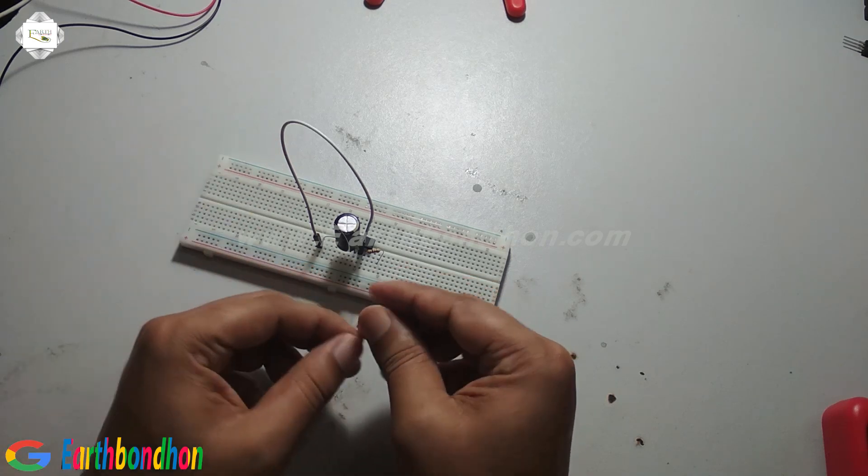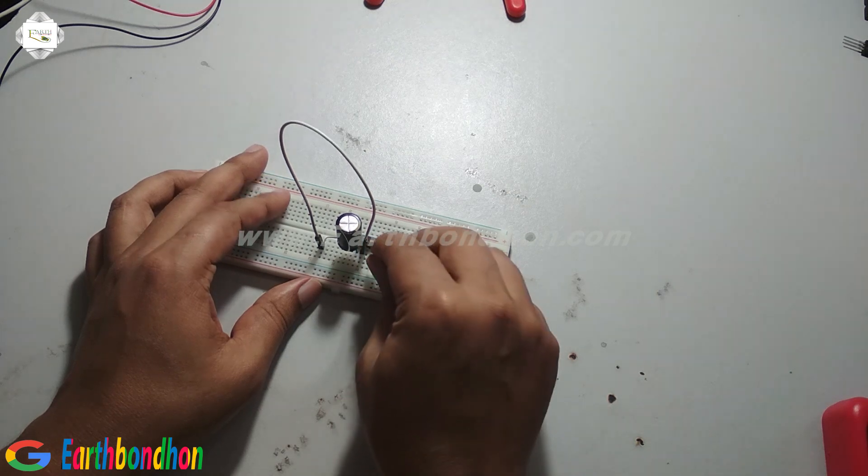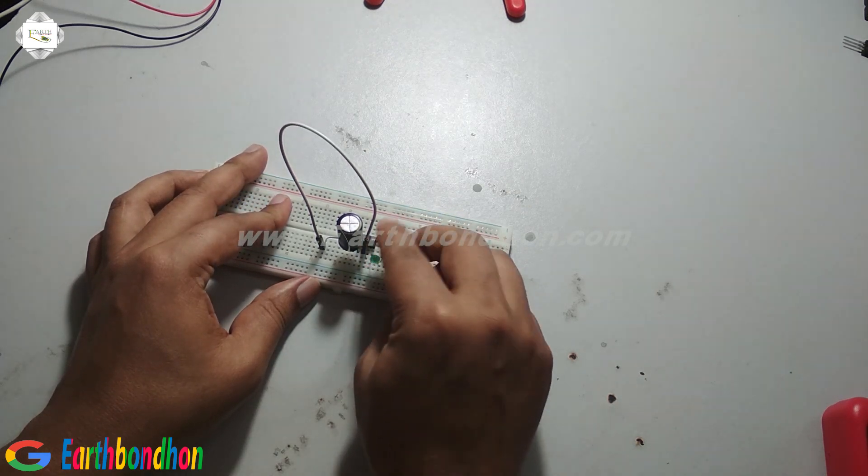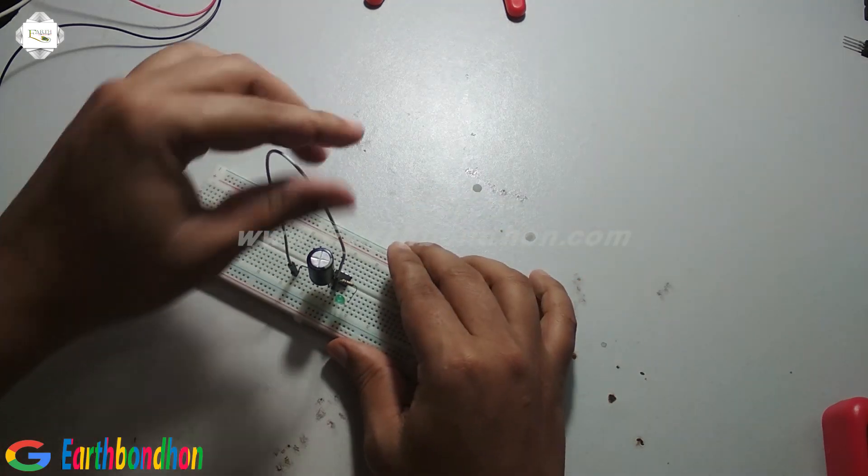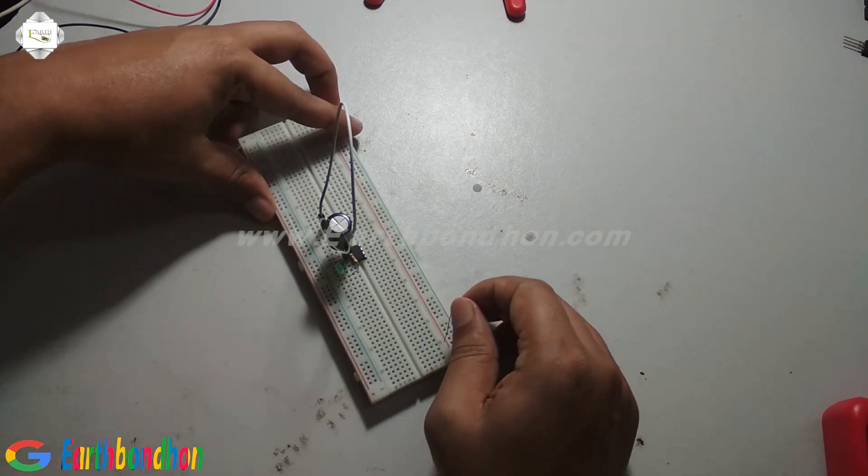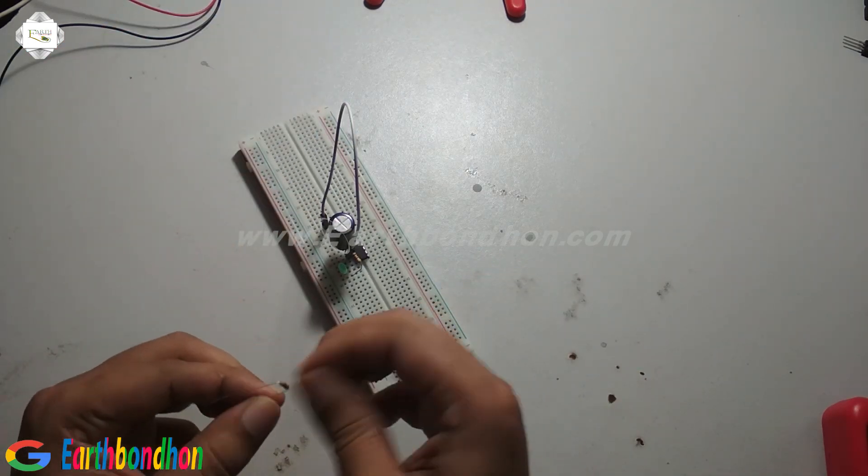A resistor is connected between pin number 4 and pin number 8. You're going to connect a resistor to pin number 8.